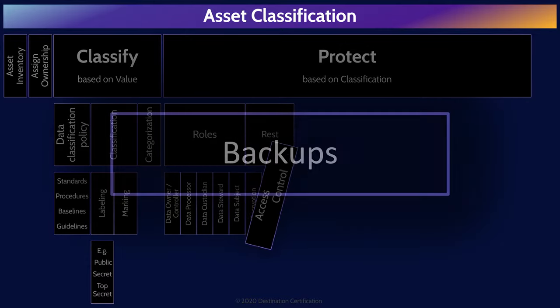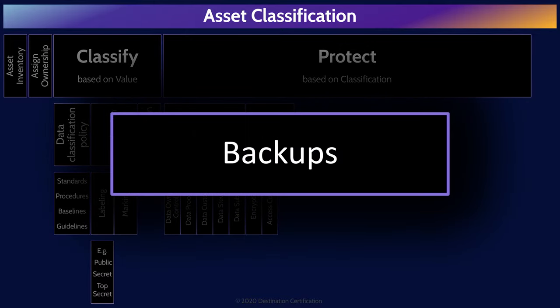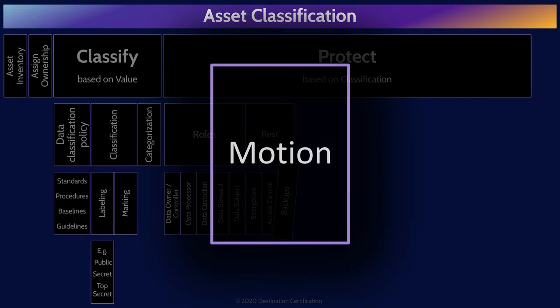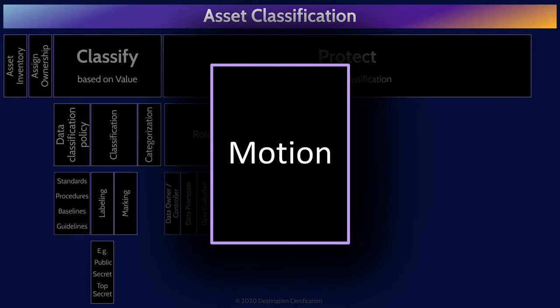To ensure data is not accidentally lost or destroyed, we can have all sorts of different data backup and data resiliency controls. The next major grouping of controls are for data in motion — data that is in transit across a network.